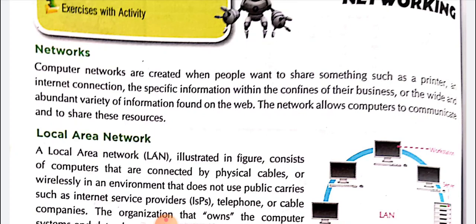Firstly, we will know about what is a network. Computer networks are created when people want to share something such as a printer and internet connection, or specific information within the confines of their business. Computer networks are created so people can share their own information and the wide and abundant variety of information found on the web. That network allows computers to communicate and to share resources. There are two networks.